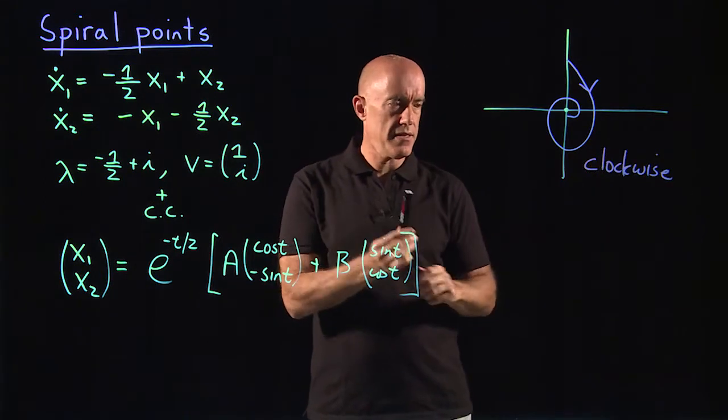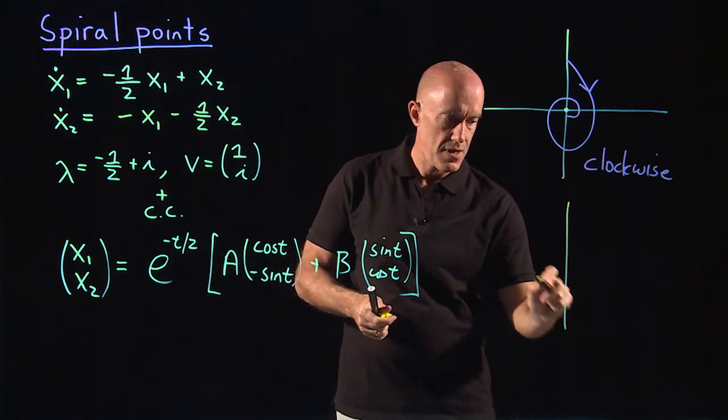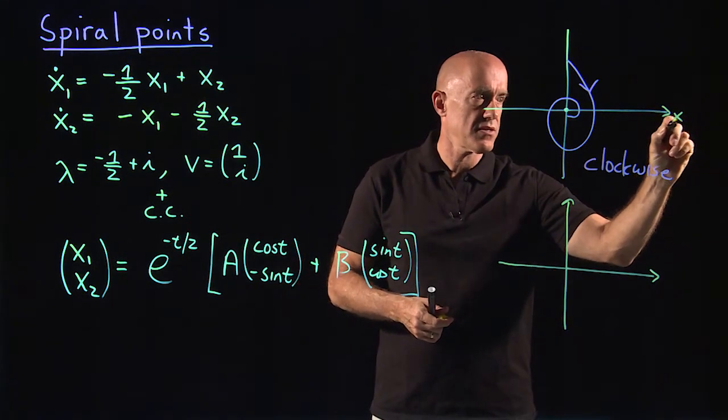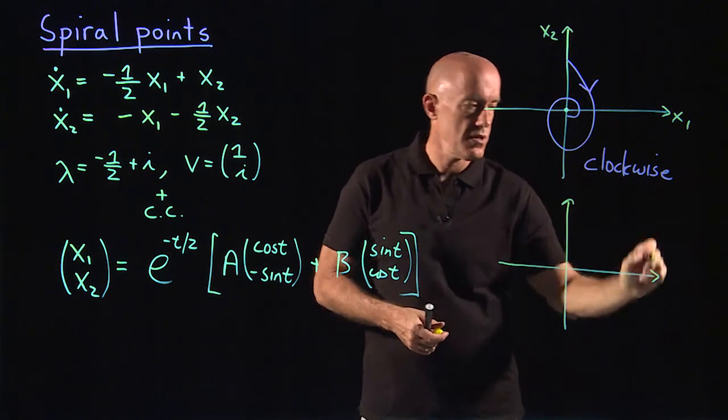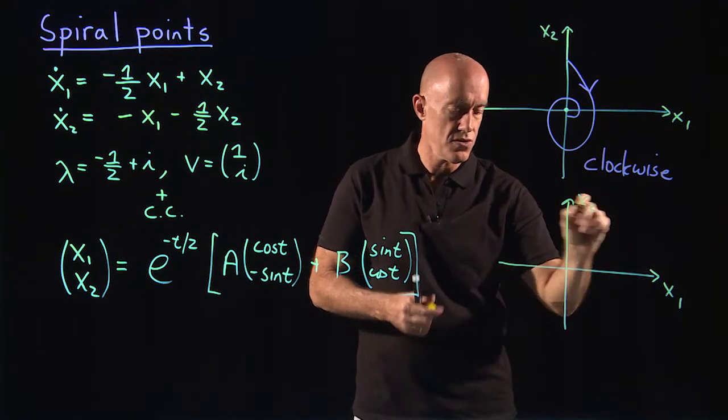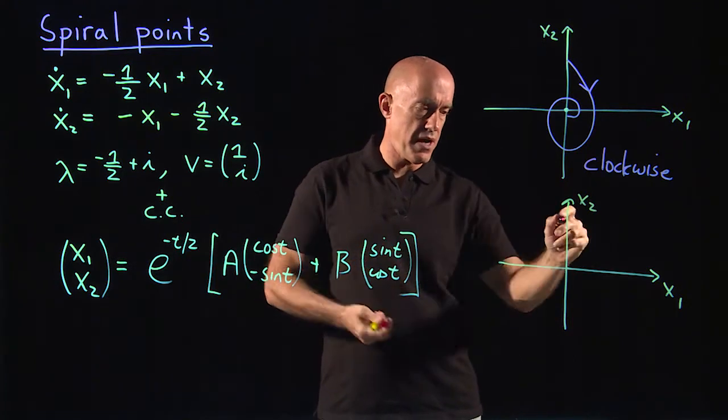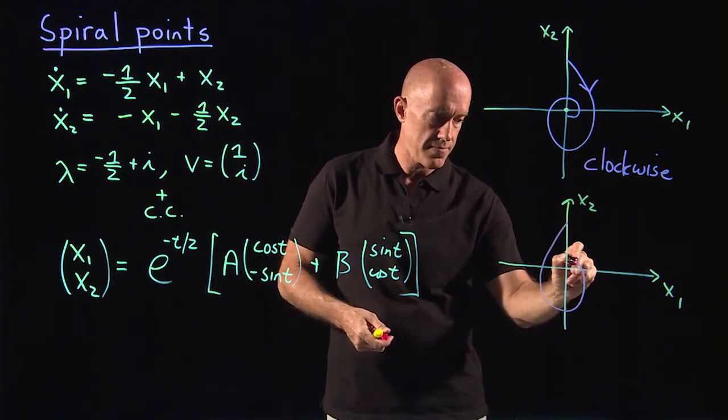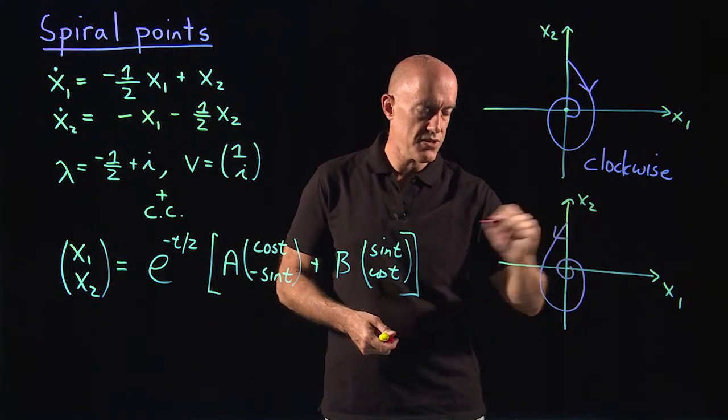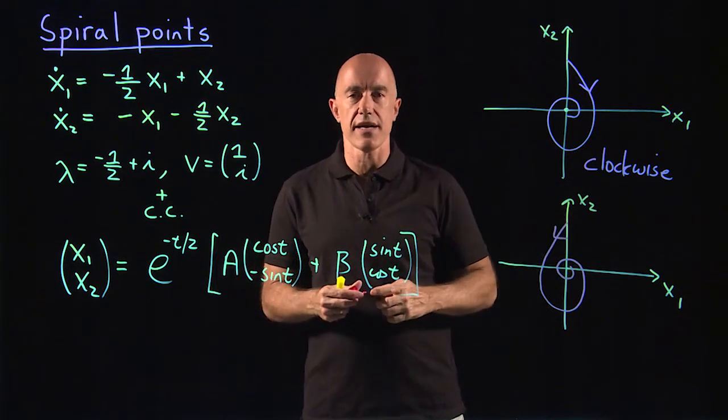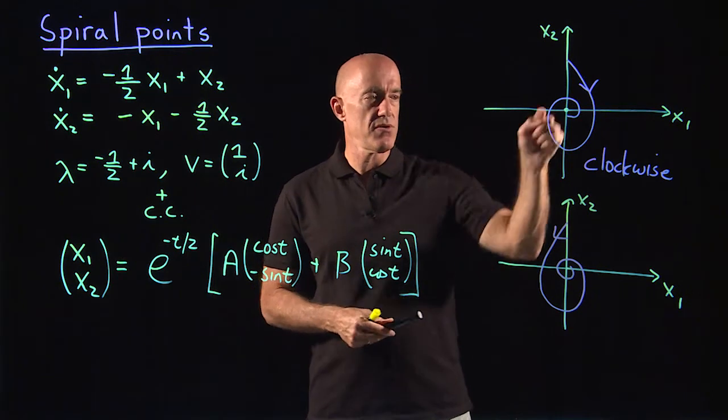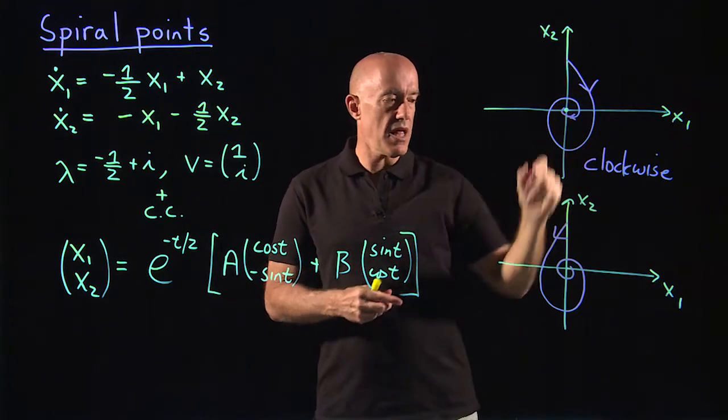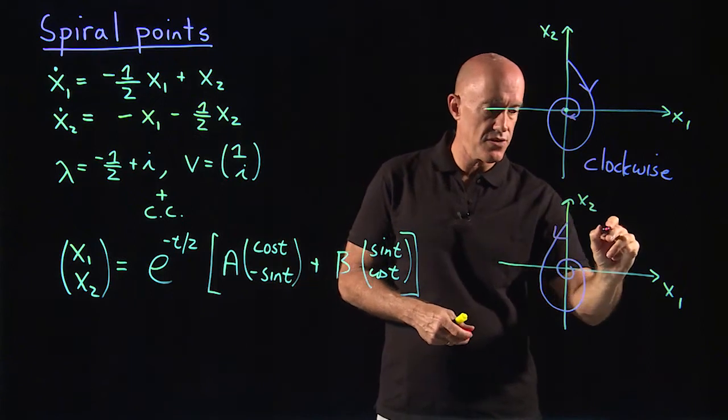On the other hand, if we have a counterclockwise spiral. So remember, this is x1 and x2, x1 and x2. A counterclockwise spiral will be spiraling into the origin, but in the other direction, like so. So the solution can look like one of these. It's a spiral into the origin. But could be clockwise, or in this case, it's counterclockwise.